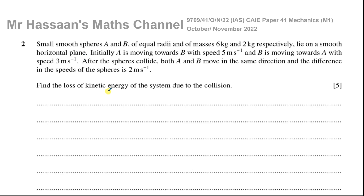We are told about two small smooth spheres A and B of equal radii, with masses of six kilograms and two kilograms respectively. They lie on a smooth horizontal plane. Initially A is moving towards B with a speed of five meters per second, and B is moving towards A with a speed of three meters per second. After the collision both A and B move in the same direction, and the difference in their speeds is two meters per second. We need to find the loss of kinetic energy due to the collision.